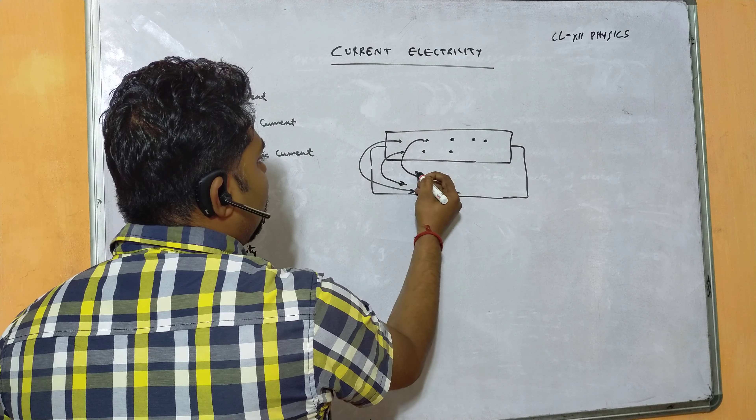Drift velocity is defined as the average velocity acquired by electrons in a conductor when subjected to an electric field. When a conductor is connected to a battery, the electrons drift towards the positive terminal and the positive ions drift towards the negative terminal. This directed motion caused by the external electric field is called drift velocity.